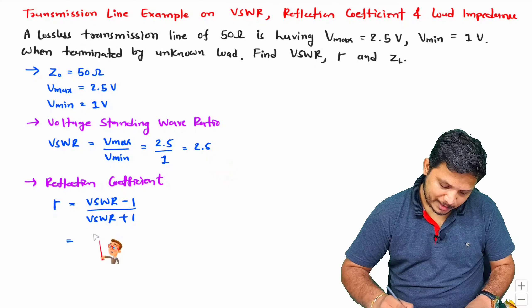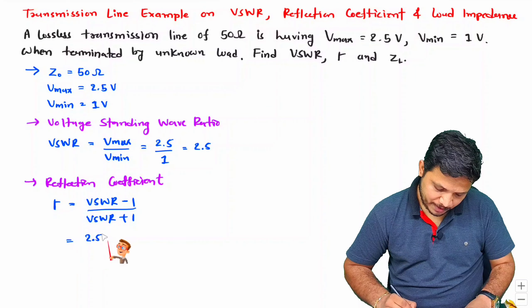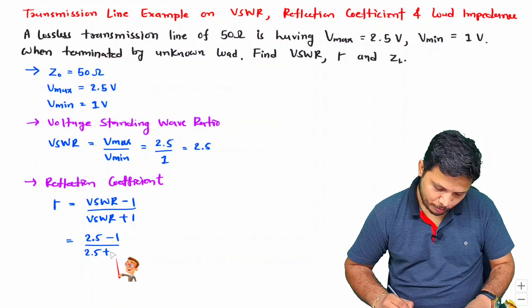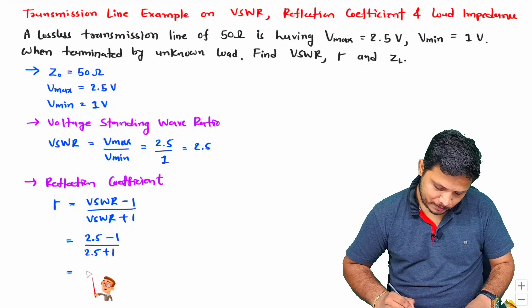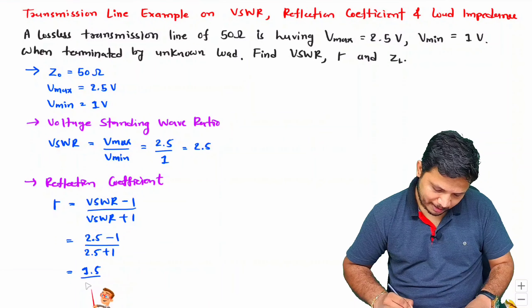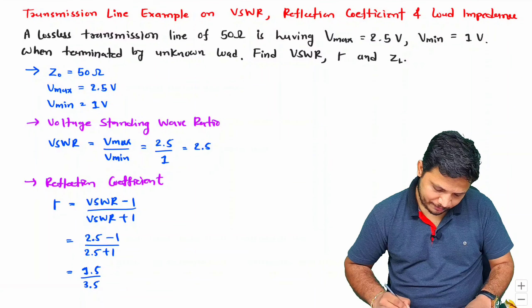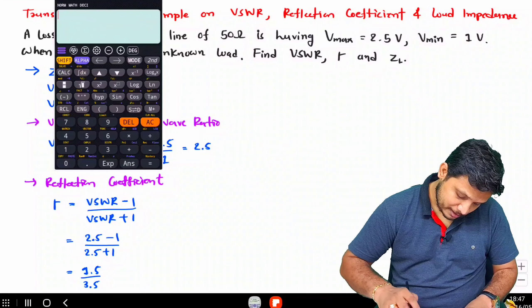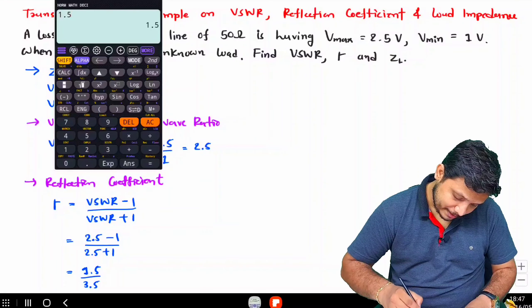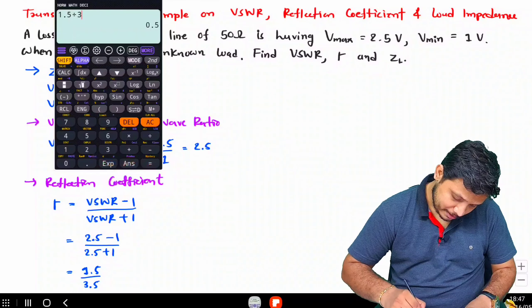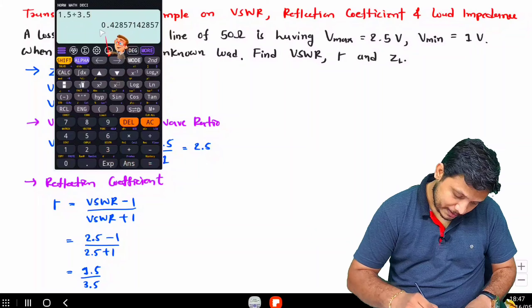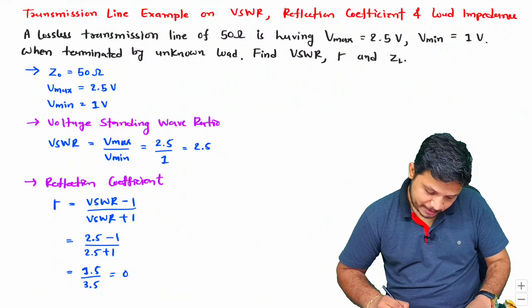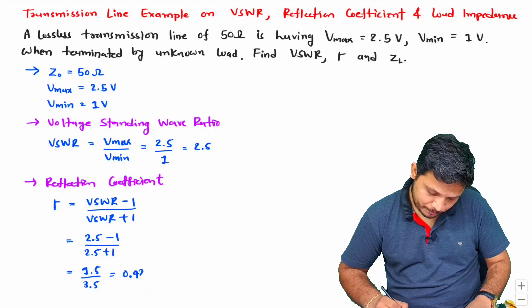VSWR is 2.5, which we already calculated. So 2.5 minus 1 divided by 2.5 plus 1, which is 1.5 divided by 3.5. Let us calculate this: 1.5 divided by 3.5 is 0.42, so the reflection coefficient is 0.428.